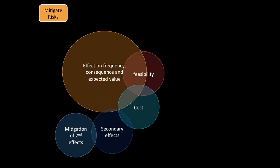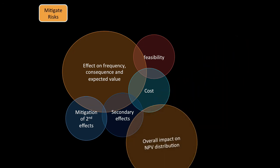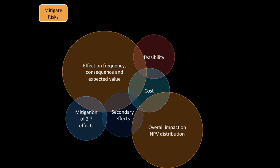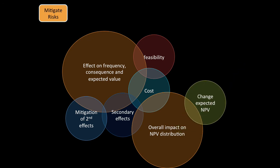We want to look with mitigating risk: what is the effect on frequency, consequence, and expected value? Is it feasible? What are the costs? Are there going to be any secondary effects, and are we going to have to do mitigation of the secondary effects? So if you get reinsurance, is there a risk of the reinsurance blowing up? What's the overall impact on the net present value distribution? Does it change the expected net present value? It's going to change it, but it's definitely going to reduce the net present value's variance.